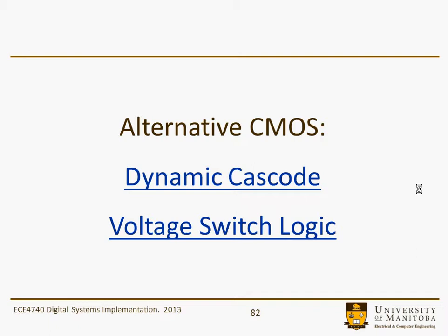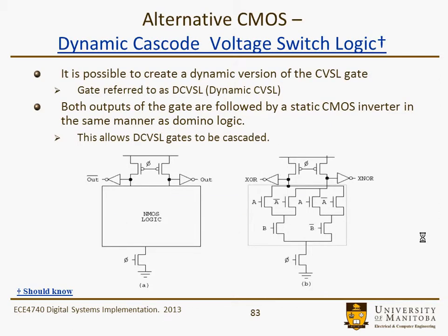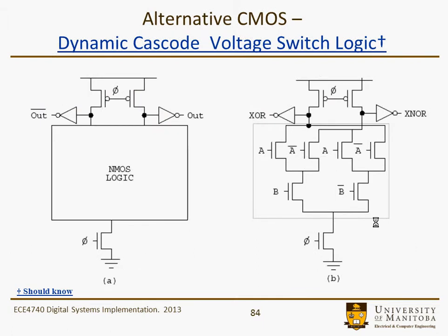This is dynamic cascode voltage switch logic. Before we looked at cascode voltage switch logic, and now this one just becomes dynamic by adding a clock. In the basic schematic, phi allows us to pre-charge these nodes, and phi-bar conditionally discharges them. With cascode voltage switch logic, we get both out and out-bar. Here's an example of the XOR and XNOR implemented in the circuit. You may see this if you're ever working and designing some high-speed logic gates.